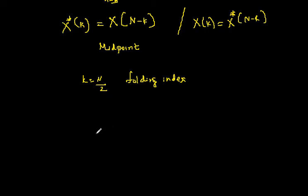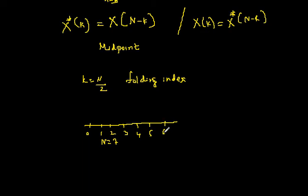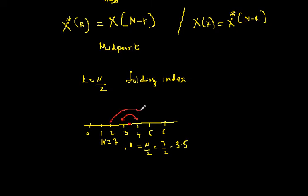To illustrate this, consider a 7-point DFT with indices 0, 1, 2, 3, 4, 5, 6. The folding index is k = N/2 = 7/2 = 3.5. So the DFT is symmetric about the point 3.5. Points to the left are conjugate symmetric to their counterparts on the right: X(3) = X*(4), X(2) = X*(5), and X(1) = X*(6).